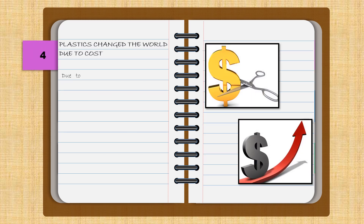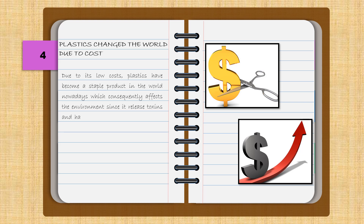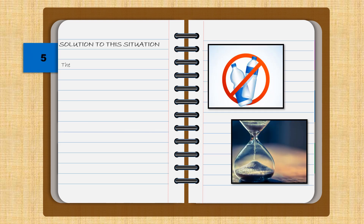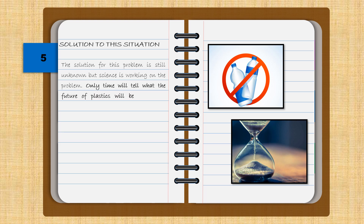Due to its low cost, plastic has become a staple product worldwide, which consequently affects the environment since it releases toxins and harmful substances into the air. Besides that, there is also a steady rise in the cost of the fuels needed for its production. The solution for this problem is still unknown, but science is working on it. Only time will tell what the future of plastics will be, but it is unlikely that the world will ever be without them.